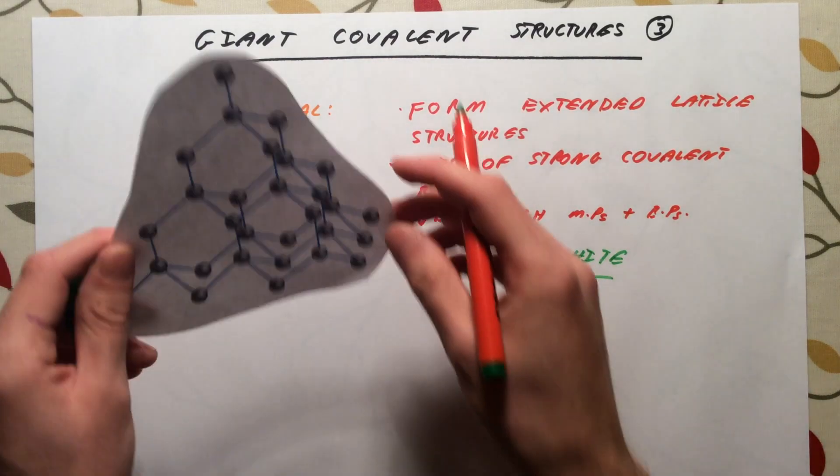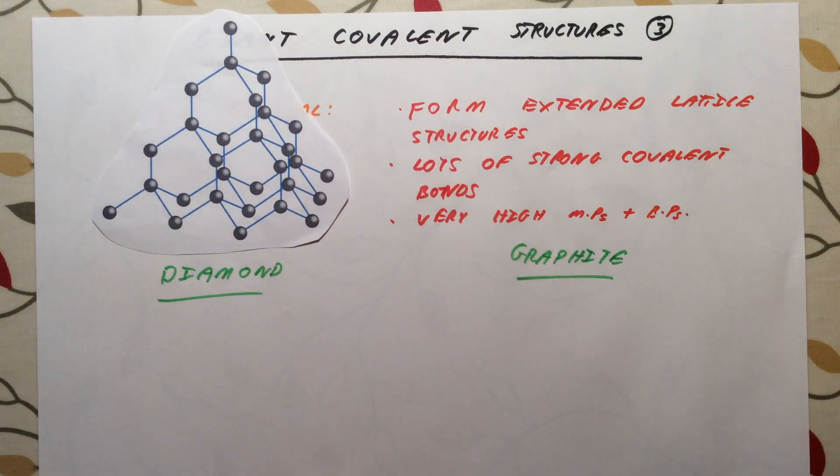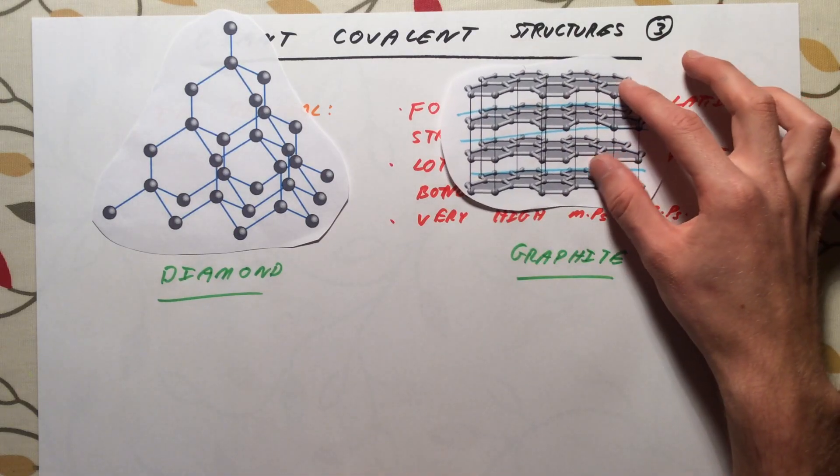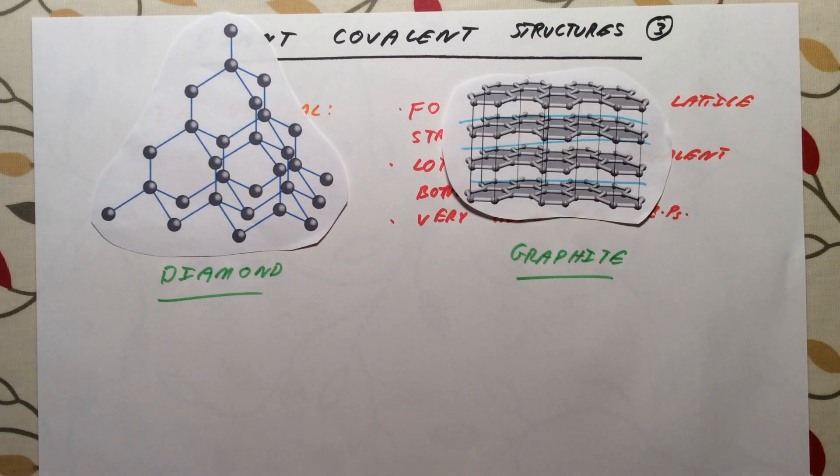While we're doing this, I'm going to leave the structures of them above. If you want to pause the video and have a look at these as we're going through, that's absolutely fine. So graphite and diamond. First off, we're going to talk through the features of them.